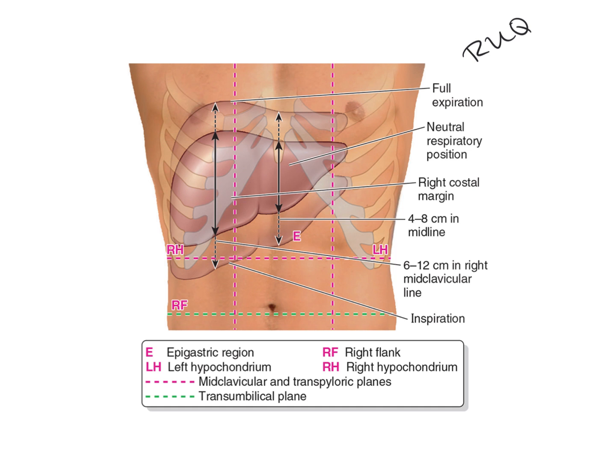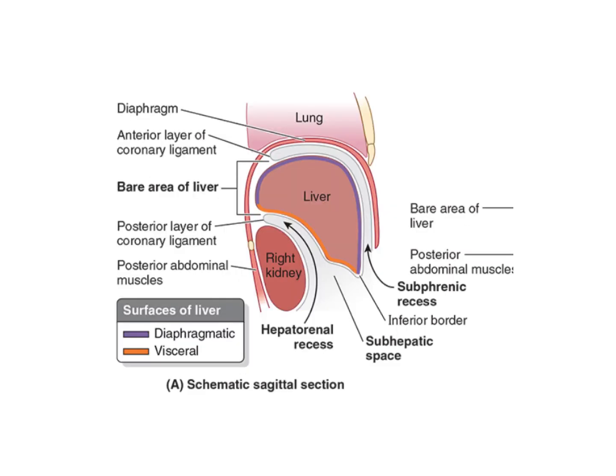The liver has a diaphragmatic surface and a visceral surface. The diaphragmatic surface is smooth and dome-shaped, related to the concavity of the inferior surface of the diaphragm, and it separates the liver from the pleura, lungs, pericardium, and heart. The subphrenic recesses are superior extensions of the peritoneal cavity that exist between the diaphragm and the anterior and superior aspects of the diaphragmatic surface of the liver.